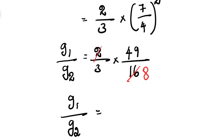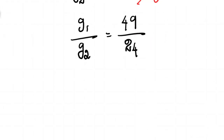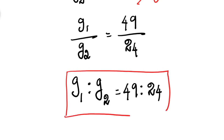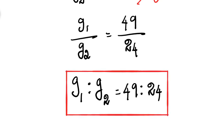So the answer is G1 by G2 equals 49 divided by 24. The ratio of acceleration due to gravity of the two planets is 49 is to 24.